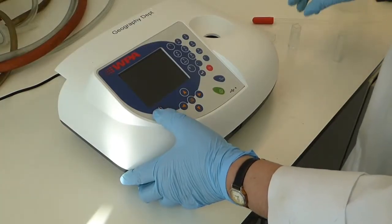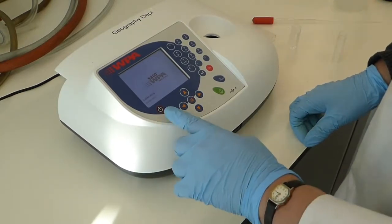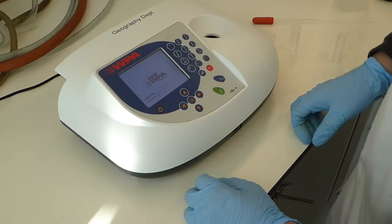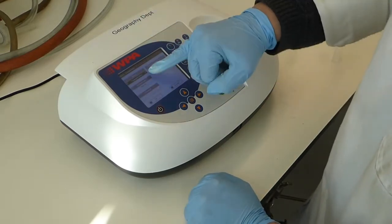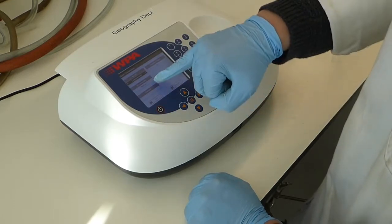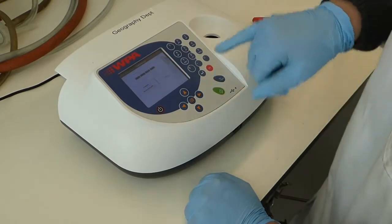To use the spectrophotometer, first you need to switch it on and let it go through its warm-up stage. Then you need to check by pressing number one that you're on transmittance percent and that you're on 540 nanometers. Click OK for that.